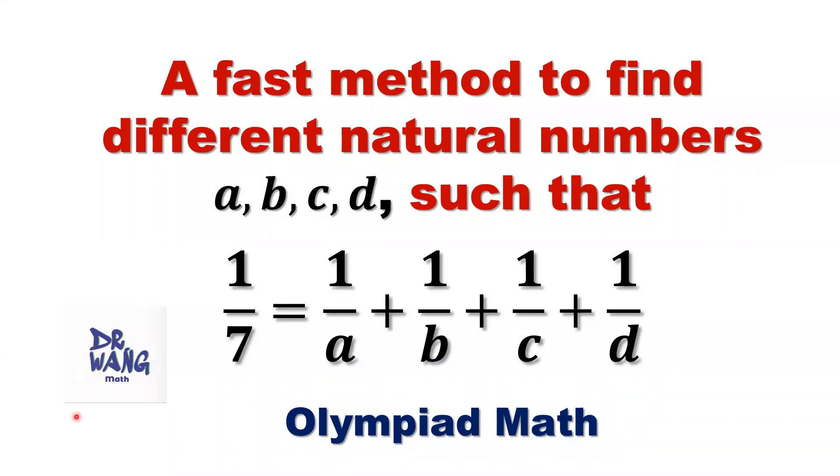Hello, everyone. I'm Dr. Wen. Here is the question. We need to find four different positive numbers such that this equation is true: 1/7 = 1/a + 1/b + 1/c + 1/d.